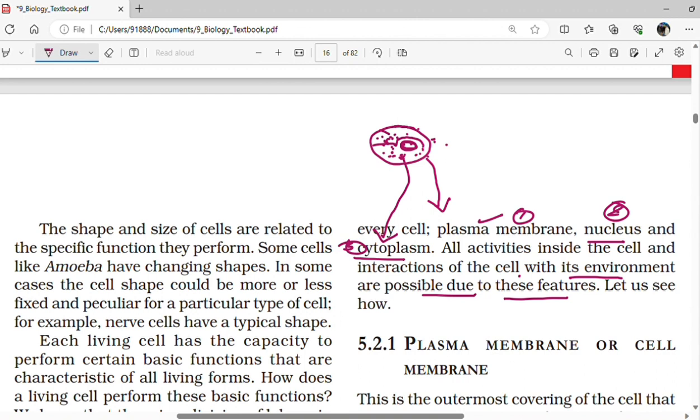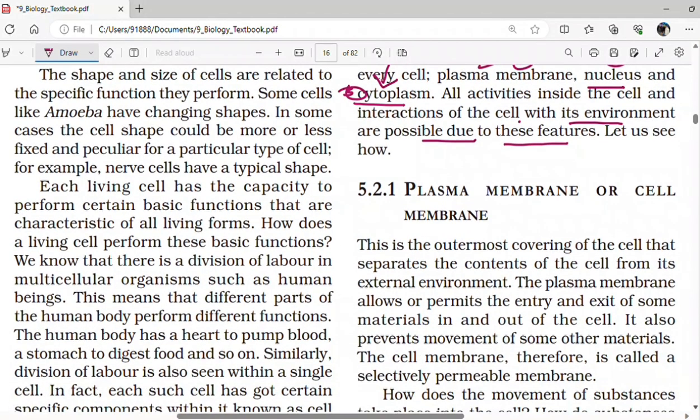Plasma membrane or cell membrane. There are three parts of the cell: plasma membrane, nucleus and cytoplasm. All cells are covered with a plasma membrane or cell membrane. Each and every cell is surrounded by a plasma membrane.